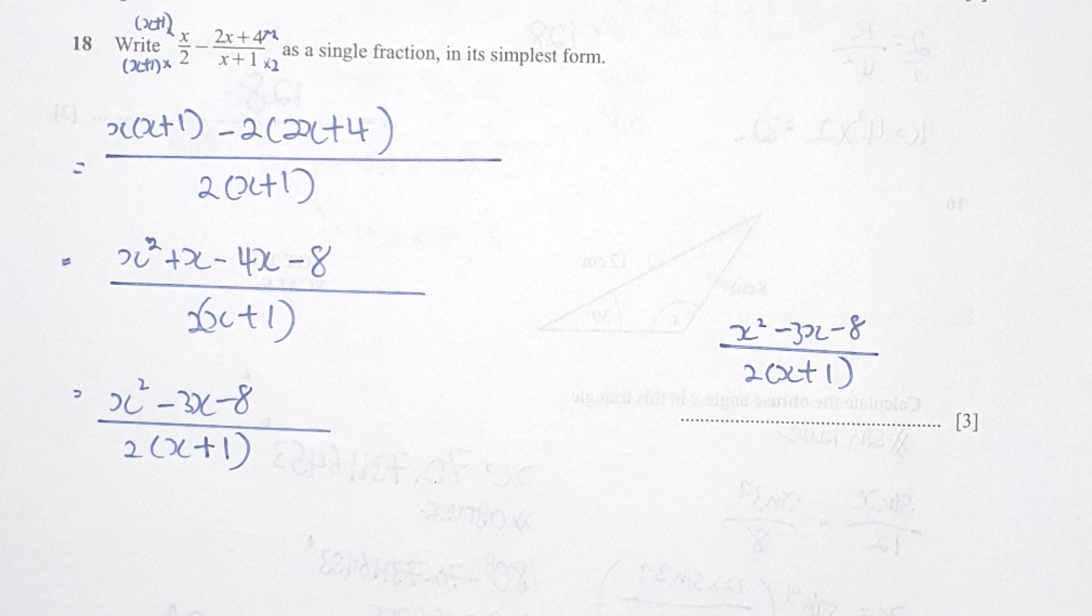For question 18 there, things that I did here was to change the denominator into the same which is two bracket x plus one. So for the first fraction there, you're required to multiply x plus one into both the numerator and denominator. Whereby for the second fraction, you're required to multiply 2 into both the numerator and denominator as well. So you should get your final results as x squared minus 3x minus 8 over 2 bracket x plus 1. So since you can't further simplify the numerator, leave it as it is.